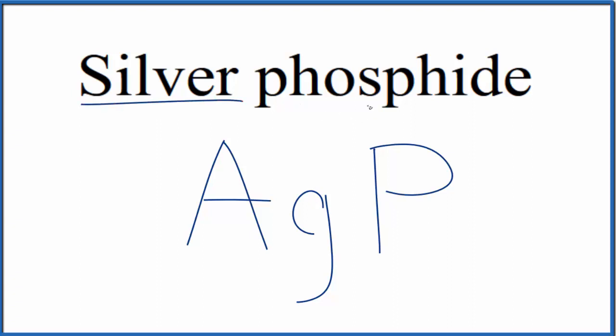We have silver, this is a transition metal, and then we have this non-metal here. We need to think about the charges. We know that the phosphide ion - phosphorus is in group 15 - so it'll form ions that are three minus.